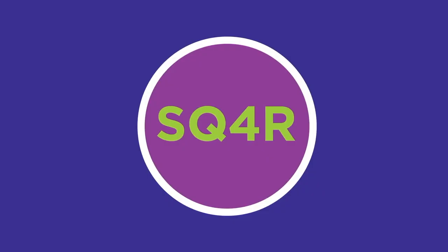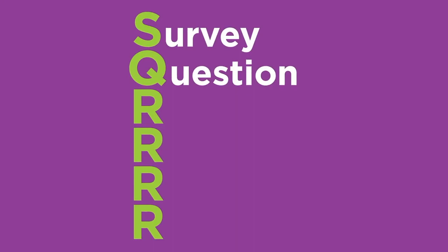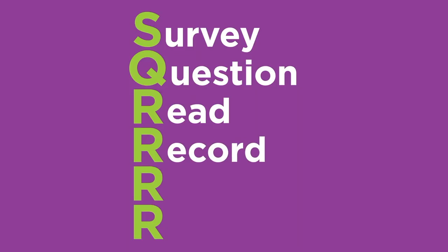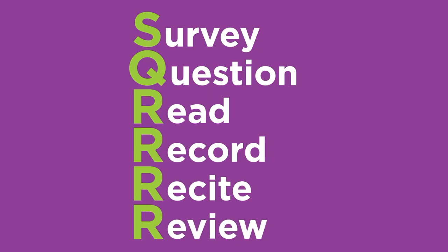SQ4R — what does that mean? It's an acronym for six steps to effectively read and understand text: survey the chapter or article, write questions for each heading, read the information one section at a time, record important information by taking notes, recite your notes out loud, and review your questions and try to answer them. Let's take a closer look at each of these steps.